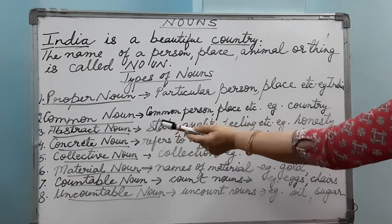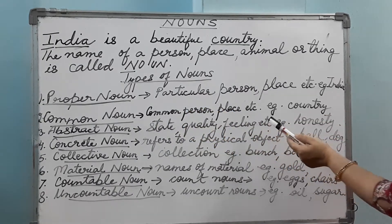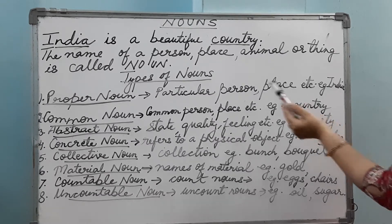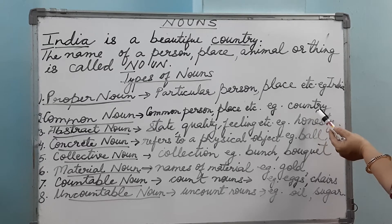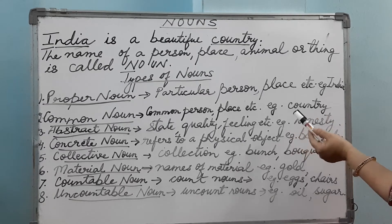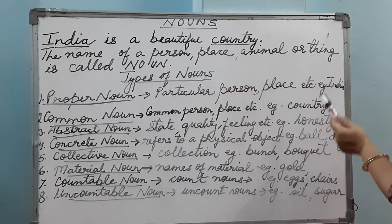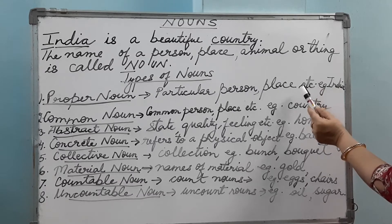Now, the common noun — these are common names, the names of a common person, place, etc. It can be common for anyone. For example, country — it can be any country, it can be India or America. When I say country, it is a common noun. But when I give a name to this country, it becomes a proper noun. Another example: girl — it can be any girl, it is not a particular girl. But when I talk about Sita, it becomes a particular girl and it becomes a proper noun. So girl is a common noun, but when I give a particular name to this girl — Sita — it becomes a proper noun.